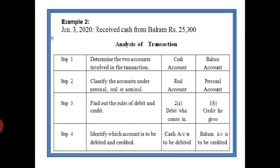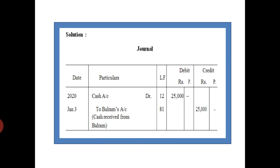Example 2: January 3rd, 2020 — Received cash from Balram rupees 25,000. Step 1: the two accounts involved are cash and Balram. Step 2: cash comes under real account; Balram is a person's name so it falls under personal account. Step 3: cash is coming into the business so it should be debited. Balram is the giver, so Balram will be credited. The entry is: Cash Account Debit, To Balram's Account. Narration: cash received from Balram.